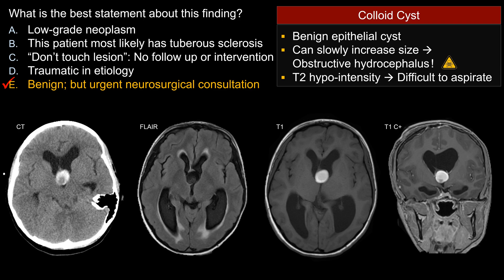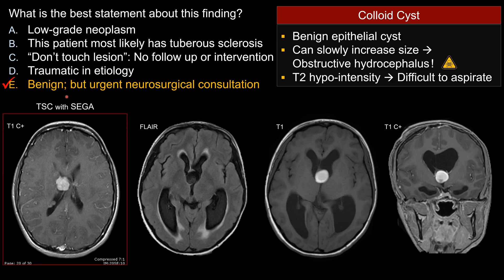Here we have a nice example of a tuberous sclerosis patient with SEGA. The location is similar in that it's adjacent to the Foramen of Monro — that's a classic location for SEGA. But with SEGA, it's a neoplasm, so it should enhance avidly, unlike a colloid cyst which should not enhance centrally. Also, colloid cysts tend to be more rounded like a cyst, whereas SEGA typically presents as a lobulated mass. For our patient, there are no other signs of tuberous sclerosis, unlike the comparison case where you can see multiple subependymal nodules. So Choice B is not the best answer.